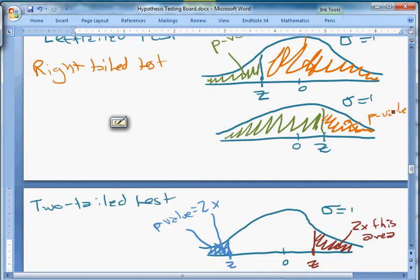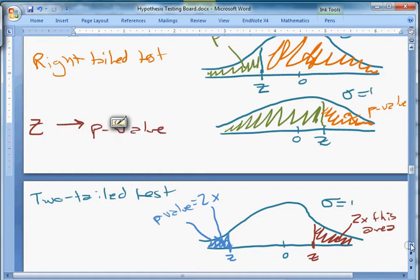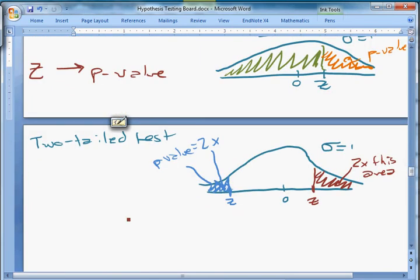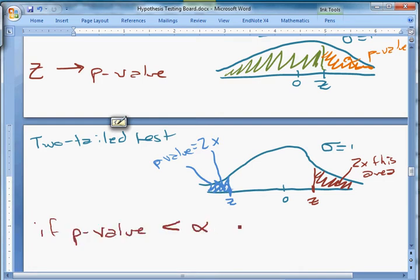And that's how you get the value for a two-tailed test, the p-value. So what you do is you take your z and then you find that area to get the p-value. That's the first step of the p-value approach. The next step to finish off step five is this. If your p-value is less than alpha, you reject the null.